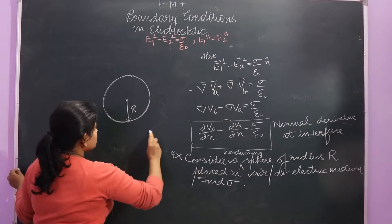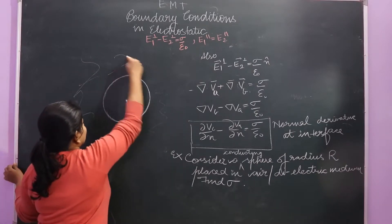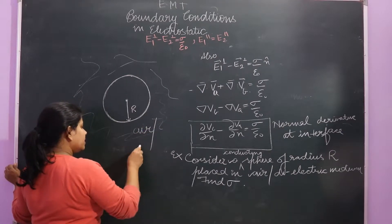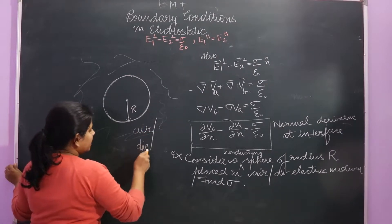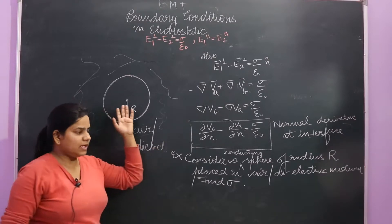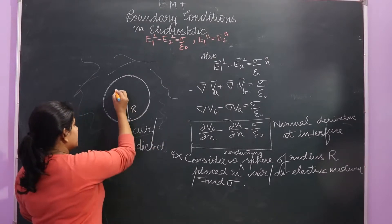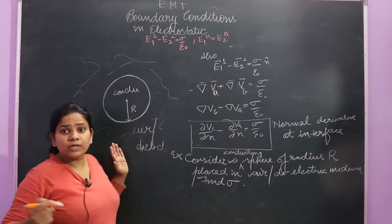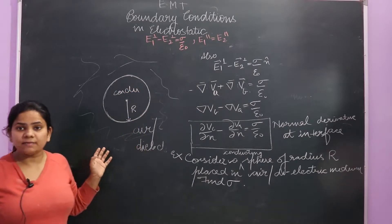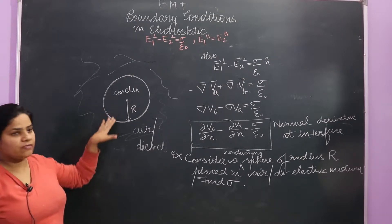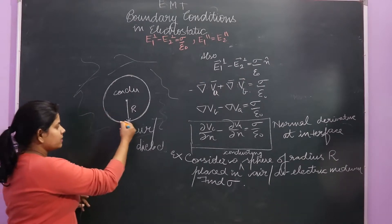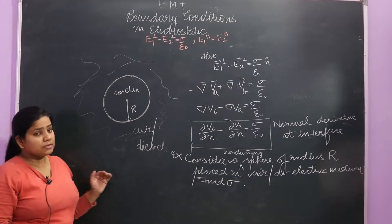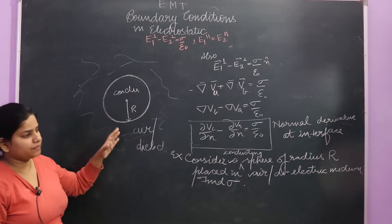Consider a conducting sphere of radius R placed in air or a dielectric medium. This conductor is surrounded by air or dielectric. Both are two different mediums, so this sphere surface is the interface separating these two mediums.